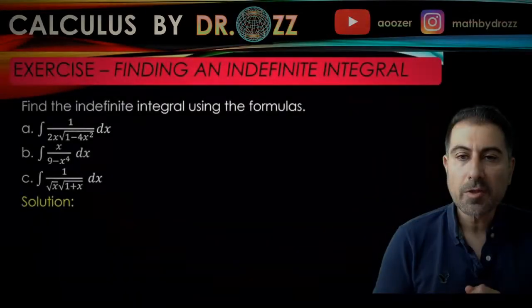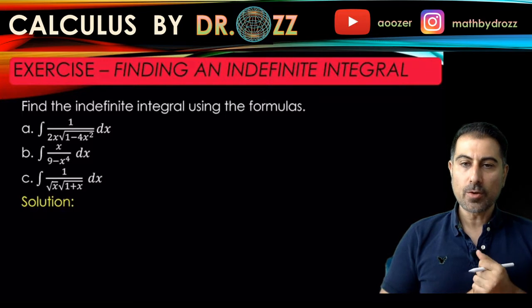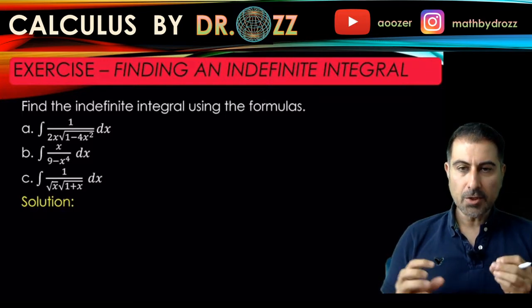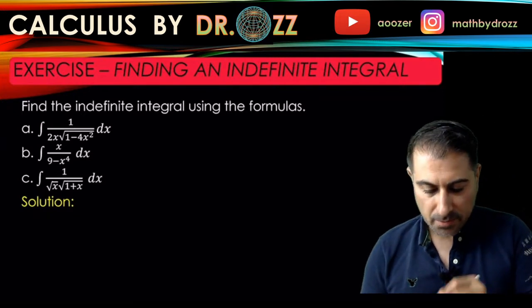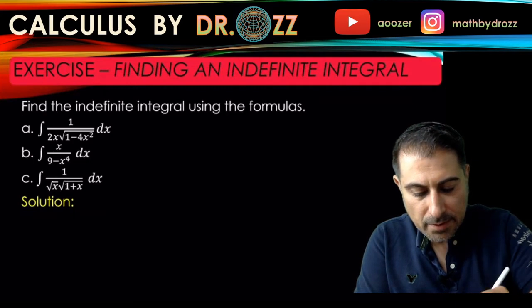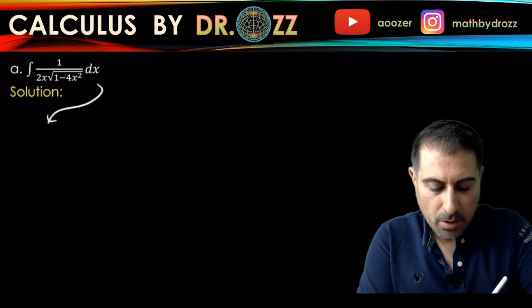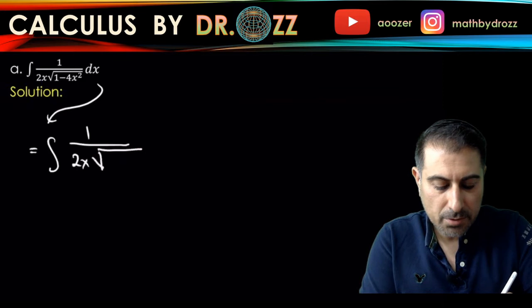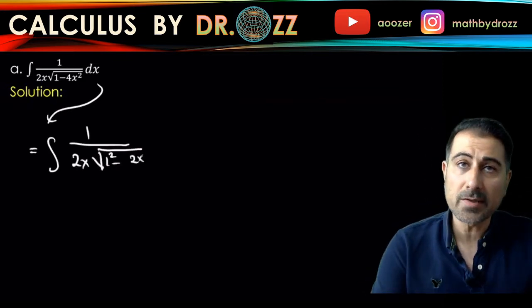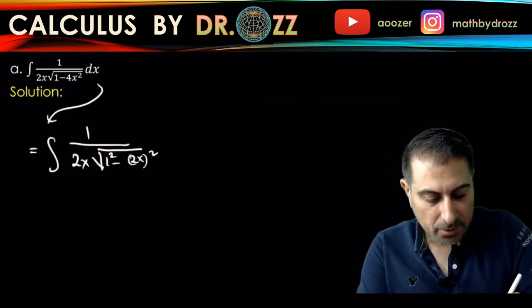Alright, let's get started. Let's start with part A. You have 1 over 2x radical 1 minus 4x squared. Inside the radical, you have the difference of squares. So let's first observe that. I'm going to rewrite this integral as 1 over 2x times 1 squared minus 2x quantity squared because 4x squared is 2x quantity squared, and don't forget to put dx here.